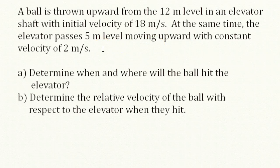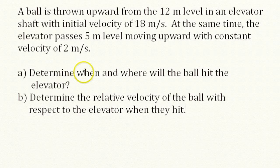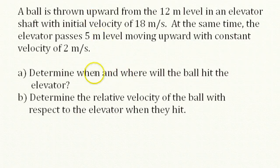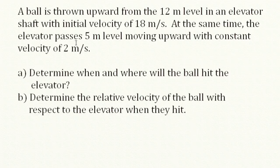Part A says determine when and where the ball will hit the elevator. We'll say that the ball and the elevator are at the same position — we have an equation of motion for the elevator and an equation of motion for the ball. We'll set them equal and solve for the time, which tells us when the ball hits the elevator. Then we'll take that time and plug it into either equation, and we'll get a position — that's where the ball hits the elevator.